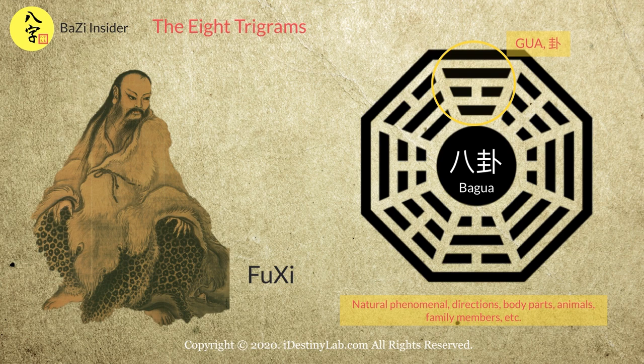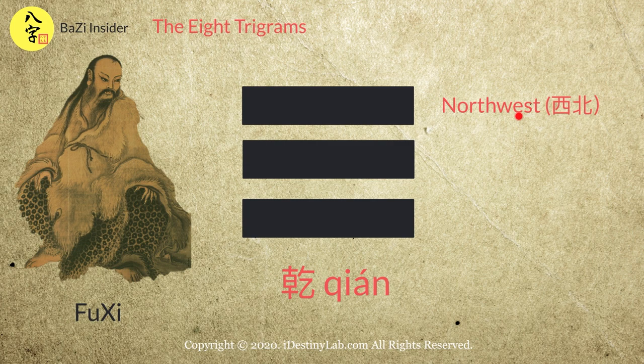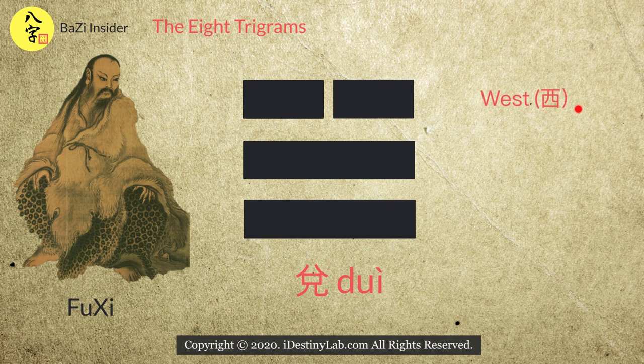So what are the 8 trigrams? Let's go through them one by one. The first Gua represents the north-west direction. It also represents heaven, white colour, and father. Its 5 elements is metal.